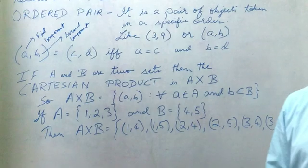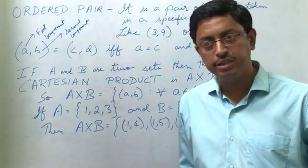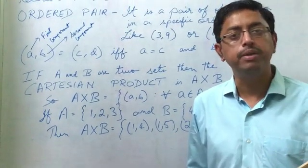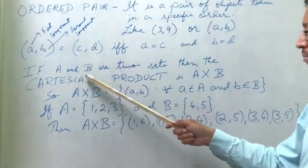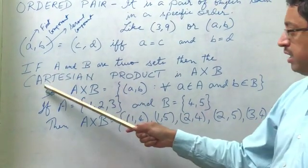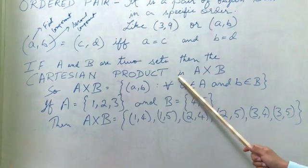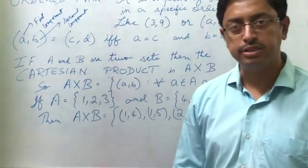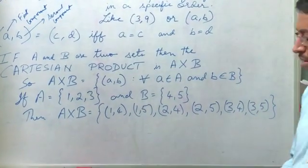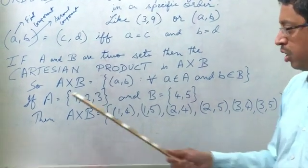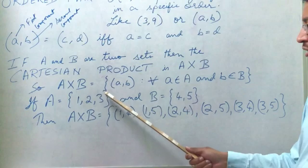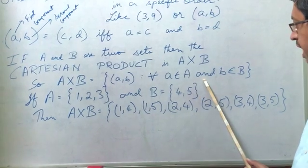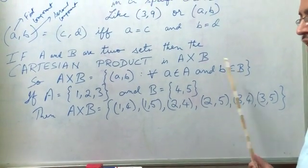Now where do we get these ordered pairs from? We basically get these ordered pairs when we have a Cartesian product of two non-empty sets. So if you have two non-empty sets, A and B, then the Cartesian product is represented by A cross B. This cross is to be pronounced as cross, not A into B or not A multiplied by B but A cross B. So A×B is equal to (a,b) for all elements a which belongs to the set A and for all elements b which belongs to set B.